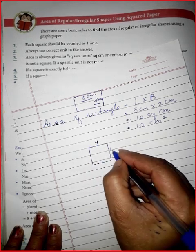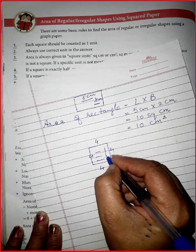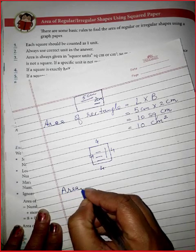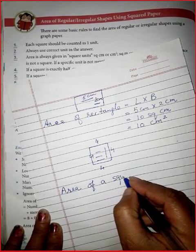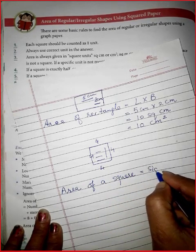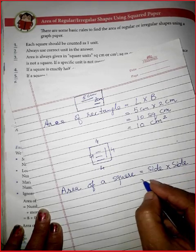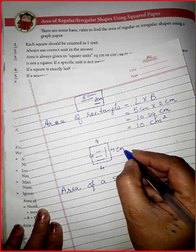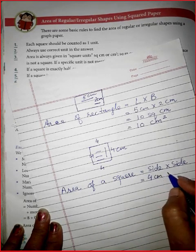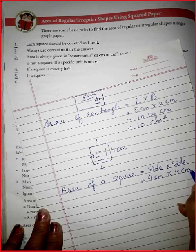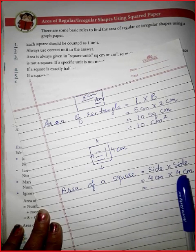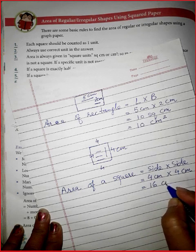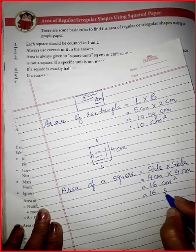Suppose a square has all sides equal to 4 centimeters. The area of a square is equal to side into side. So the side here is 4 centimeters. We multiply: 4 centimeters into 4 centimeters equals 16 square centimeters. We can write it as 16 cm² — it is compulsory to write the square unit in the answer.